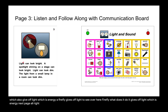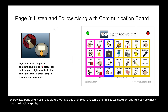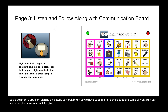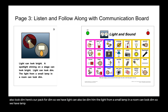Next page. In this picture we have a spotlight and a lamp. Light can look bright — so we have light, and light can be bright. A spotlight shining on a stage can look bright. Light can also look dim. Here's our peck for dim. The light from a small lamp in a room can look dim. The light from a lamp can be dim, and the light from a spotlight can look bright.